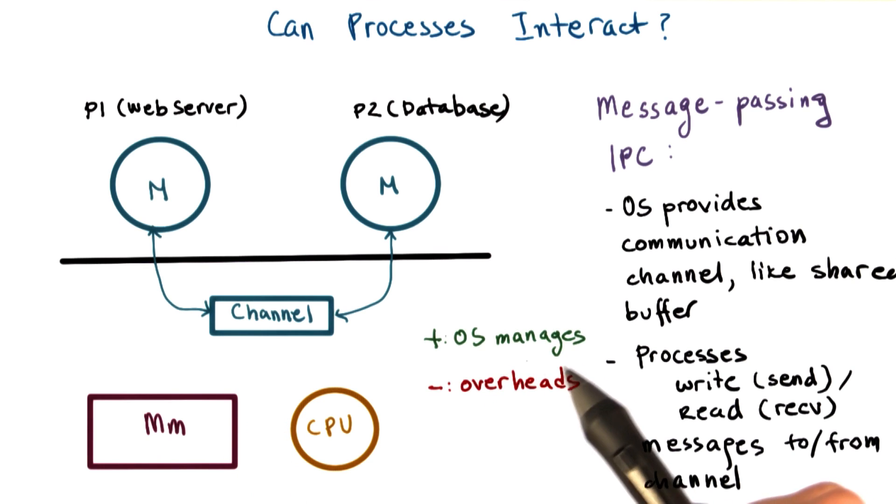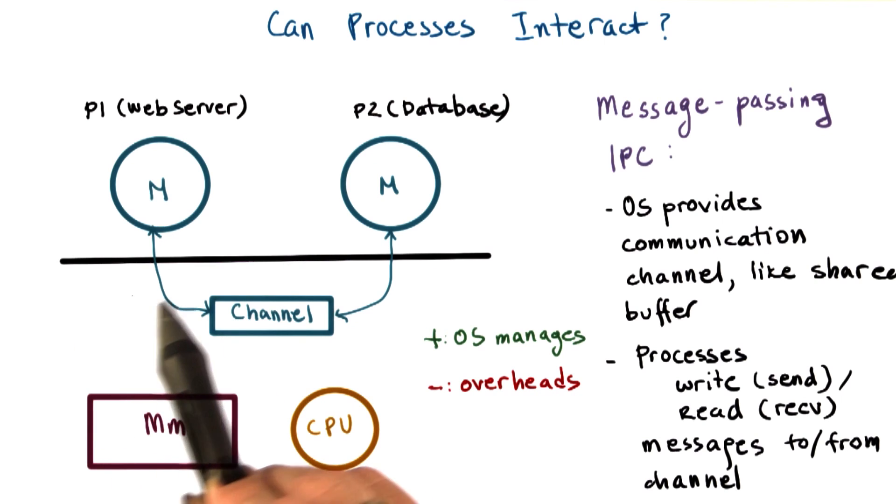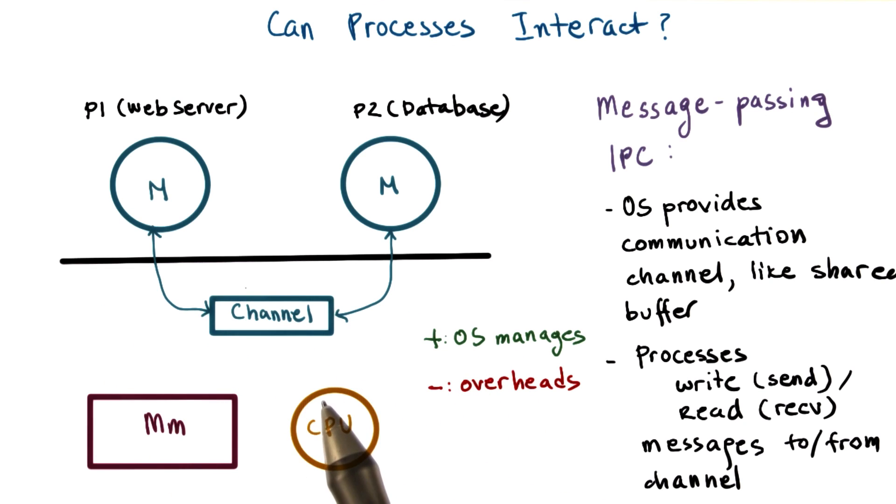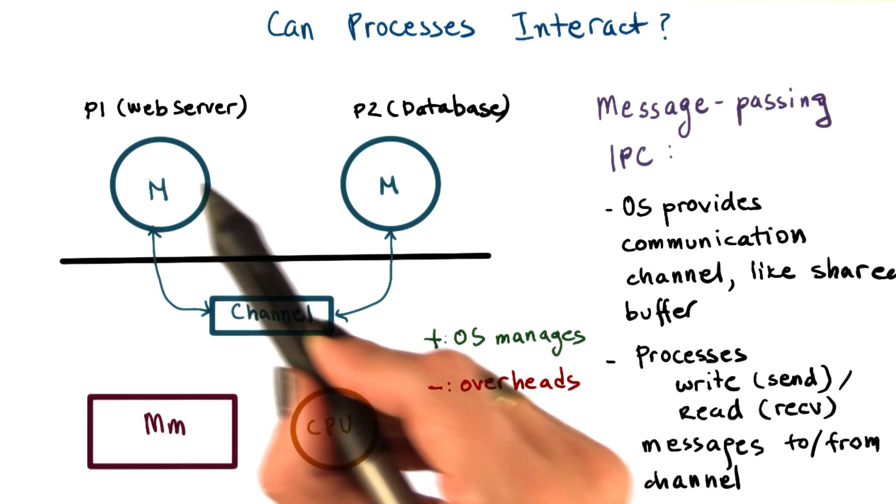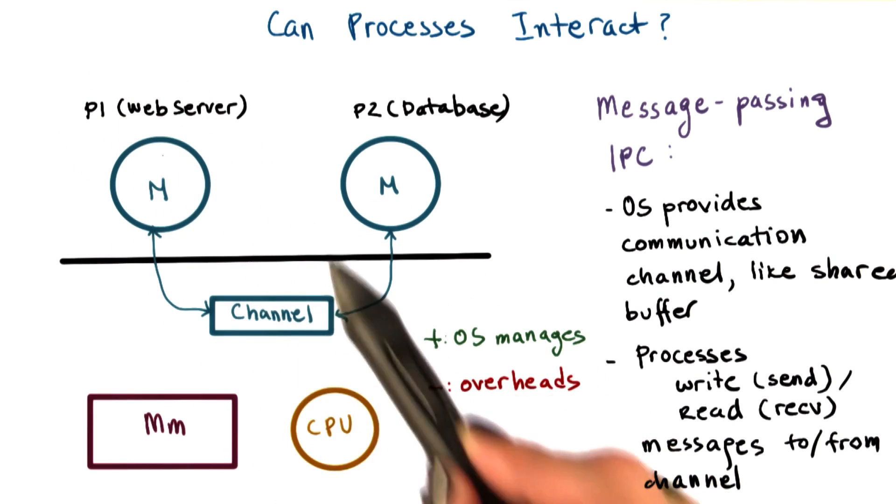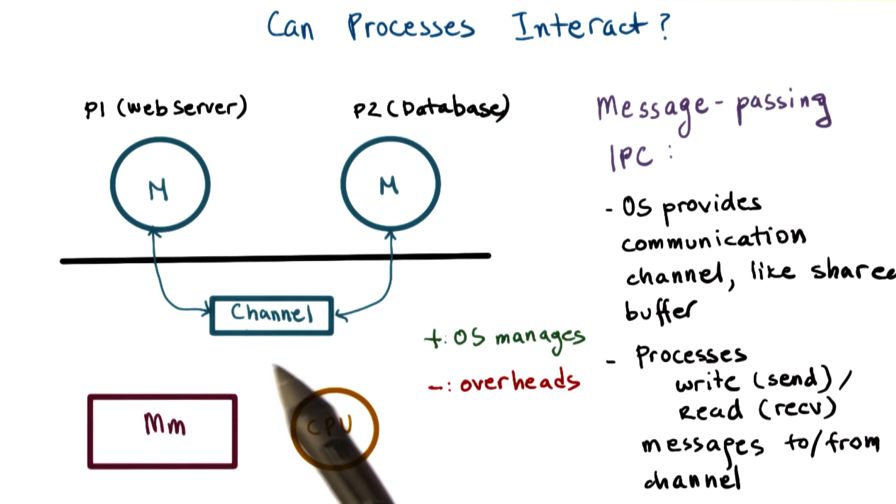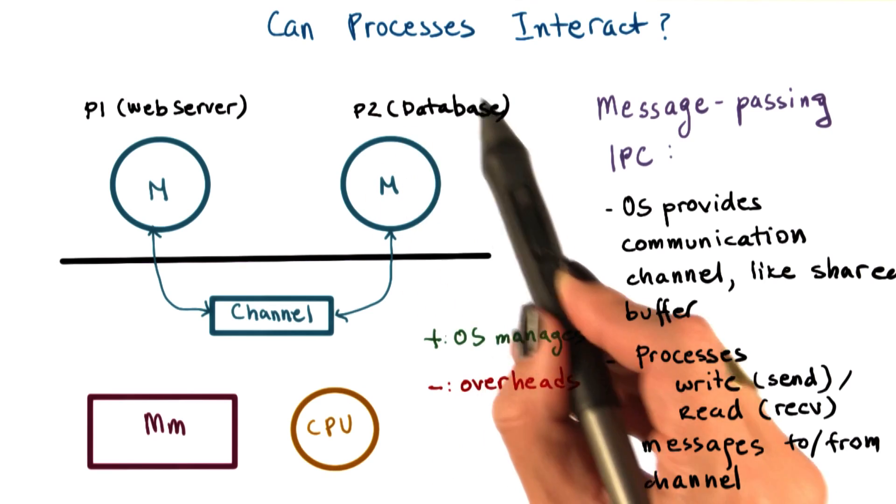The benefits of this approach is that it's really the operating system who will manage this channel. And it's the operating system that provides the exact same APIs, the exact same system calls for writing or sending data, and reading or receiving data from this communication channel. The downside is the overheads. Every single piece of information that we want to pass between these two processes, we have to copy from the user space of the first process into this channel that's sitting in the OS in the kernel memory, and then back into the address space of the second process.